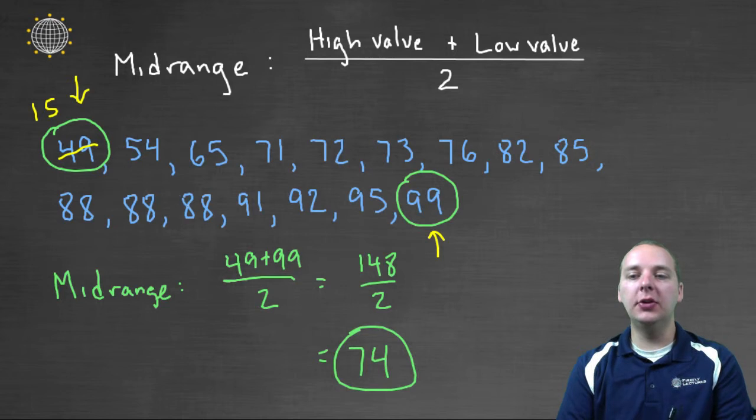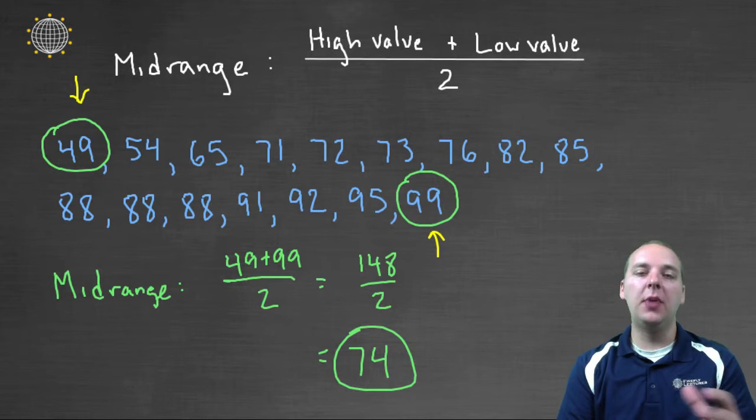So as long as you don't have many outliers, the midrange is fine. But when you start to have outliers, you might want to look at another measure of center, possibly like the median or something like that.